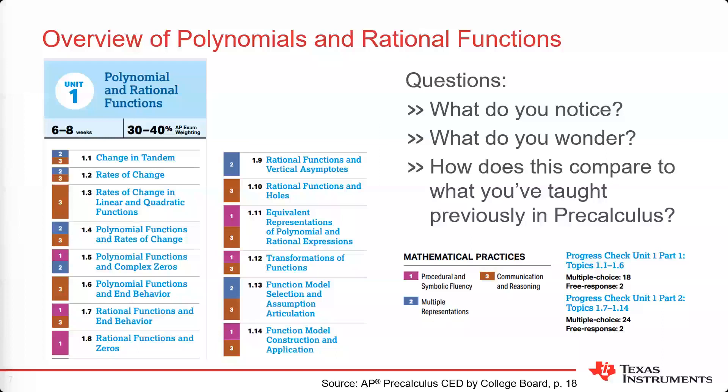A lot of people are picking up on those points. One thing that stood out was also that there is a much stronger emphasis on verbal descriptions instead of just algebraic manipulation. So many of these standards have that communication and reasoning code, meaning it's expected in pretty much all of the topics under polynomial and rational functions. Students aren't just going to be expected to solve an algebraic equation — they're going to be asked to write about it, talk about it, and use vocabulary to communicate.